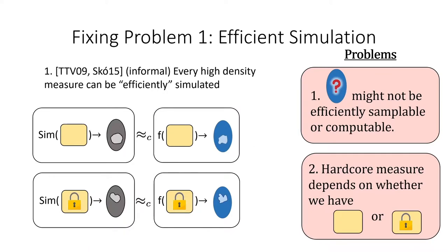To solve the first problem, we will efficiently simulate the blue measures. We observe that the blue complement hardcore measure has high density, and by a theorem from TTV09, all high density measures can be efficiently simulated. Consider a function f that takes as input either the encryption of m or the encryption of zero, computes the corresponding blue measure, and outputs a sample from it. Since the output of f has high density, there exists an efficient simulator that, given the yellow encryption, can output a sample from a distribution computationally indistinguishable from the corresponding blue complement hardcore measure. So now we have solved our first problem: instead of sampling from the blue measure, we sample from the simulated measure, which should be indistinguishable. As a final note, instead of using TTV09 directly, we actually use a theorem from Skorsky15, which is a leakage simulation variant of that theorem.